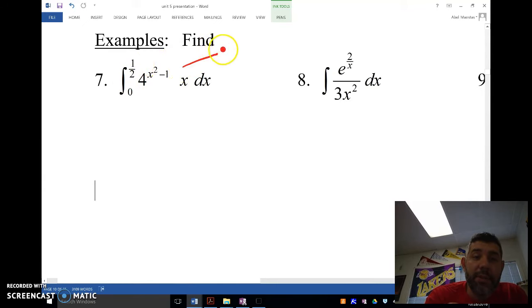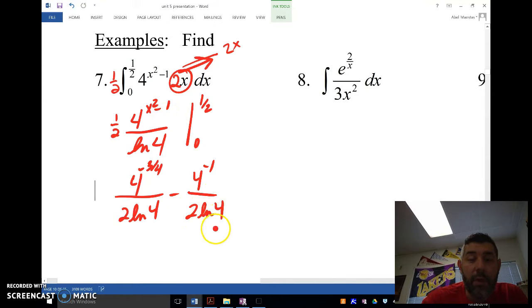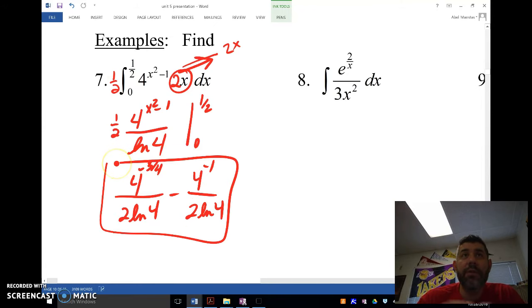So on the side here, that derivative of that's going to be 2x. So we have an x, so we need a 2. And we need a 1 half here, so that this is our hook that goes away. So we're going to end up with 1 half, 4 to the x squared minus 1, divided by ln of 4 because we're doing an exponent that's not an e. And we're going to evaluate that from 0 to 1 half. So when we put in the 1 half in there, we're going to get 1 fourth minus 1. So we're going to have 4 to the negative 3 fourths over 2 ln of 4 minus, we're going to plug the 0 in, that's going to give us a negative 1. So that's 4 to the negative 1 over 2 ln of 4. I'm going to leave it like that because we don't need to simplify that.